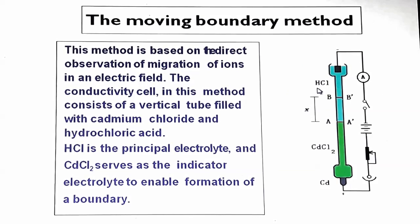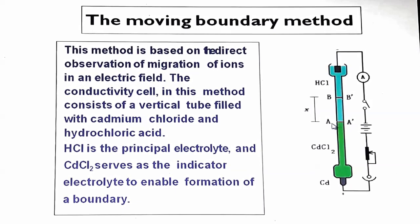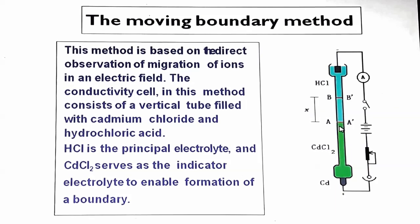Since the speed of H+ is highest, its movement is fast. Hydrogen ions move towards the cathode and are discharged there. Before electrolysis, the boundary was at AA-. After electrolysis, the boundary shifts from AA- to BB-. Although Cl- is also moving towards the anode, its speed is much less than the mobility of H+. The volume of solution moving towards the cathode — determined by the length from AA- to BB- multiplied by the cross-sectional area — decides the transference number of H+.